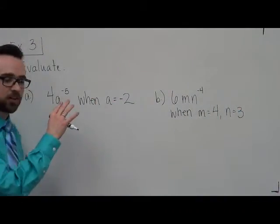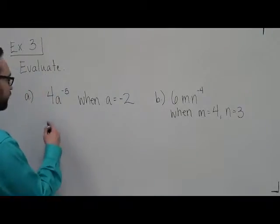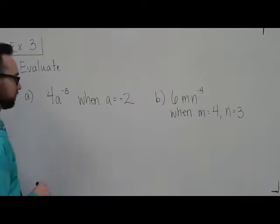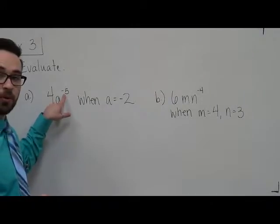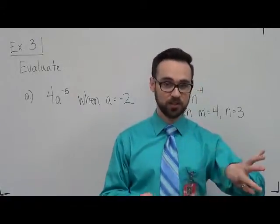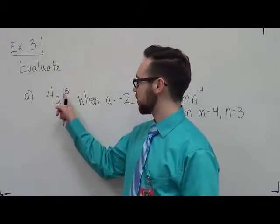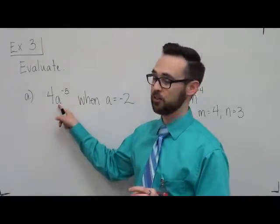So I'll do part a with you, and then I'm going to leave you to do part b, and we'll see how you do. So 4a to the negative 5. An important thing to realize, this exponent only goes with the a. It does not belong with the 4. The 4 is separate. This exponent only belongs with the variable that it's attached to.